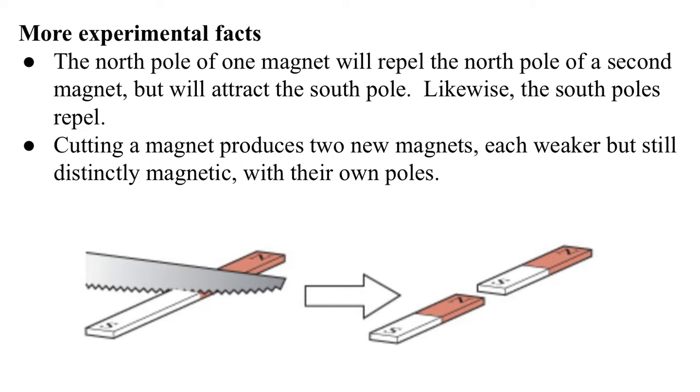Cutting a magnet in two produces two new magnets, each one weaker than the one before, but still distinctly magnetic, and with their own poles.